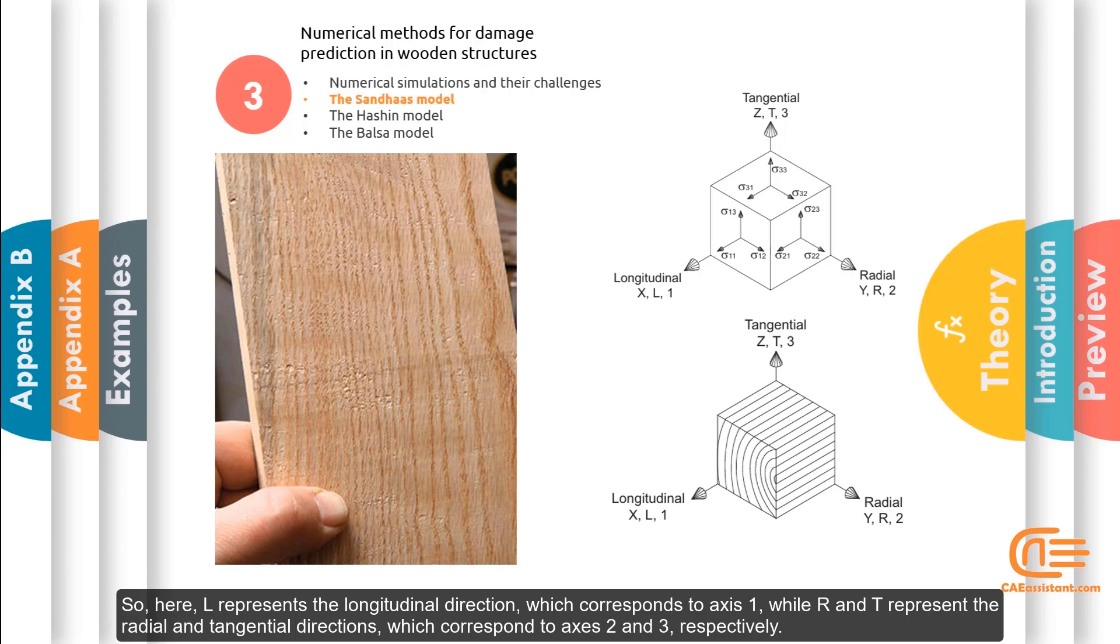So, here, L represents the longitudinal direction, which corresponds to axis 1, while R and T represent the radial and tangential directions, which correspond to axis 2 and 3, respectively.